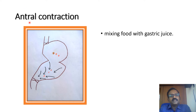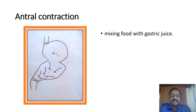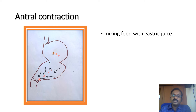The second contraction in gastric emptying is the antral contraction. It is helpful for mixing the food with the gastric juice. It is a vigorous, forceful contraction with a closed pyloric sphincter, so mixing and grinding occur in this area. Sometimes the small opening of the pyloric sphincter allows a small amount of the ground food into the duodenum — this is called the antral pump.